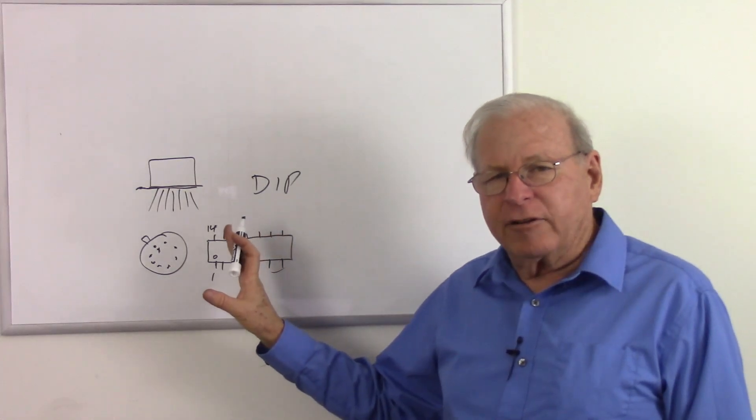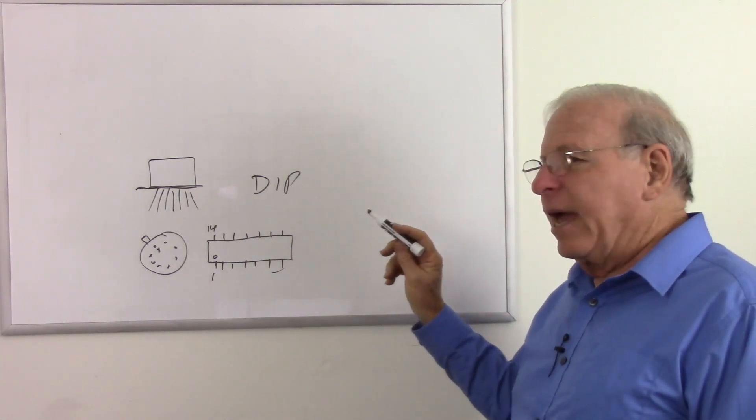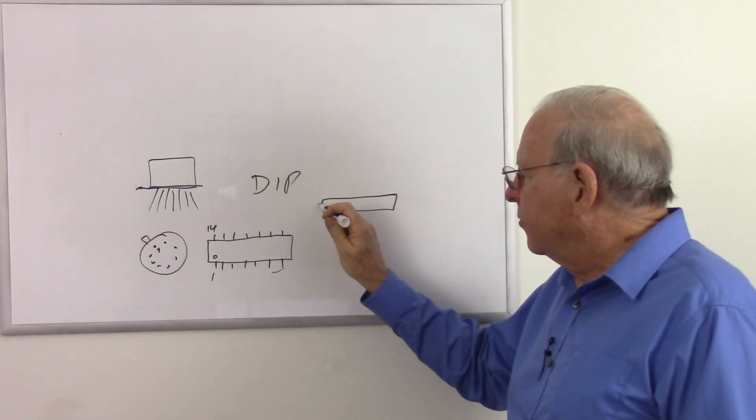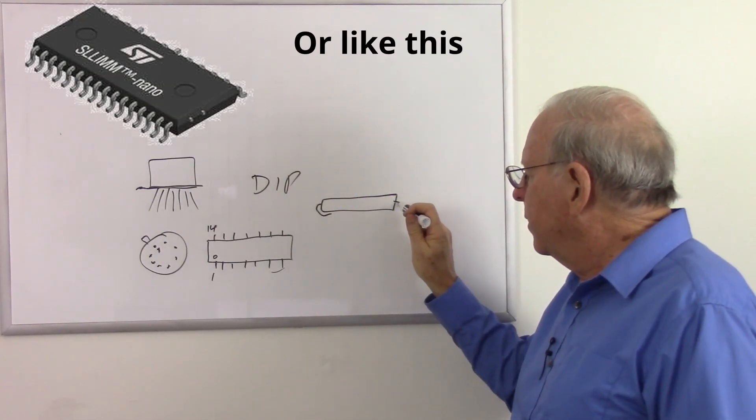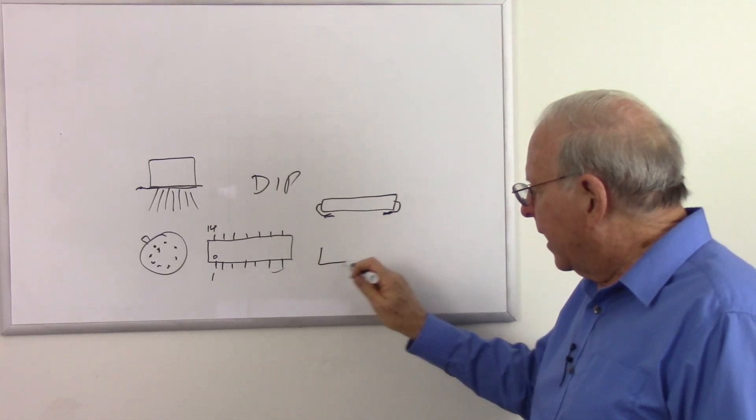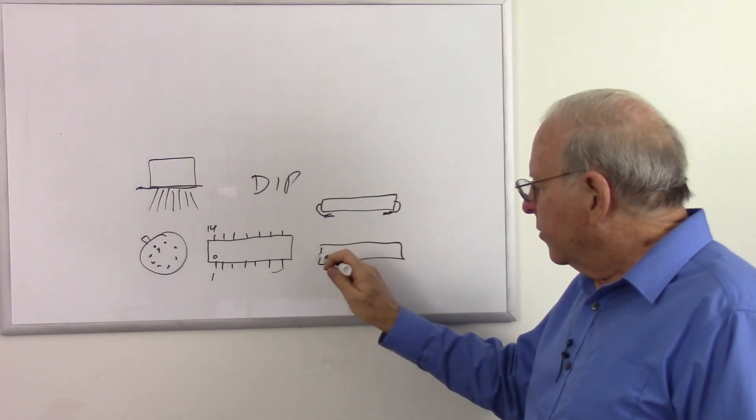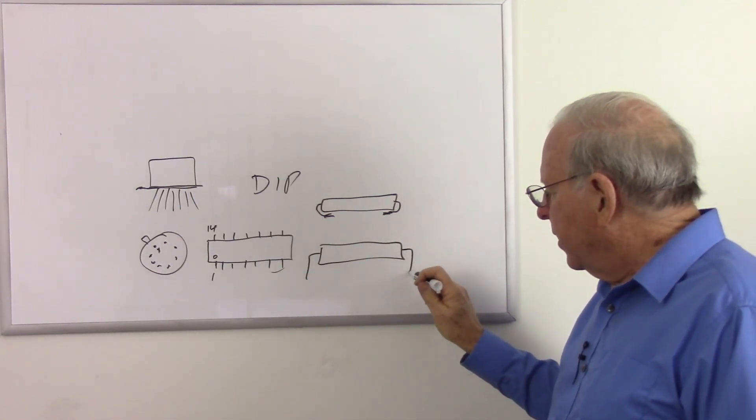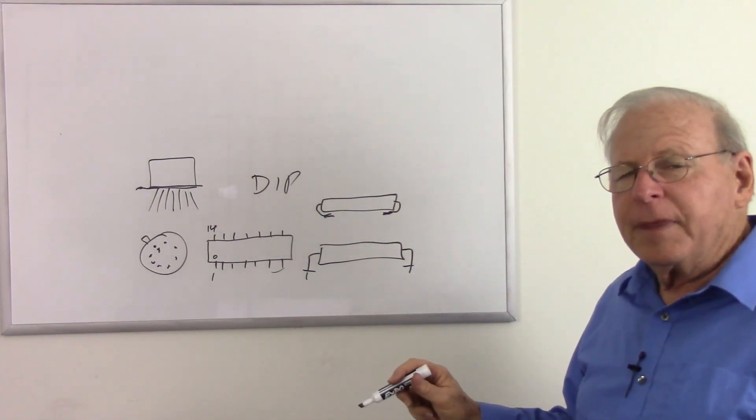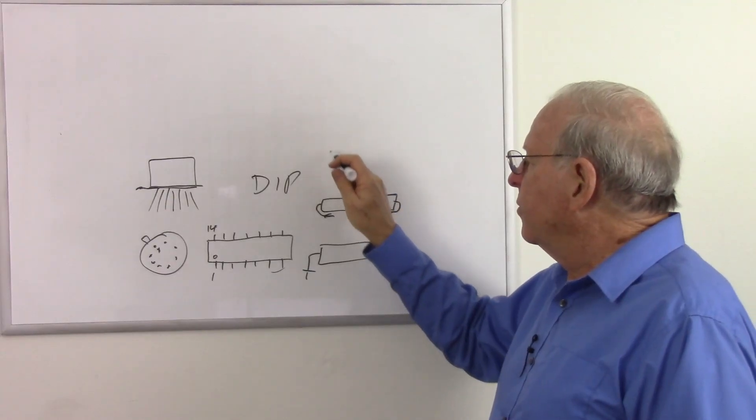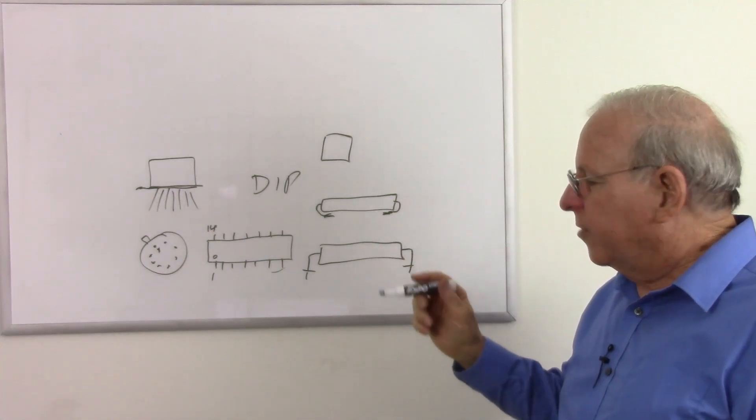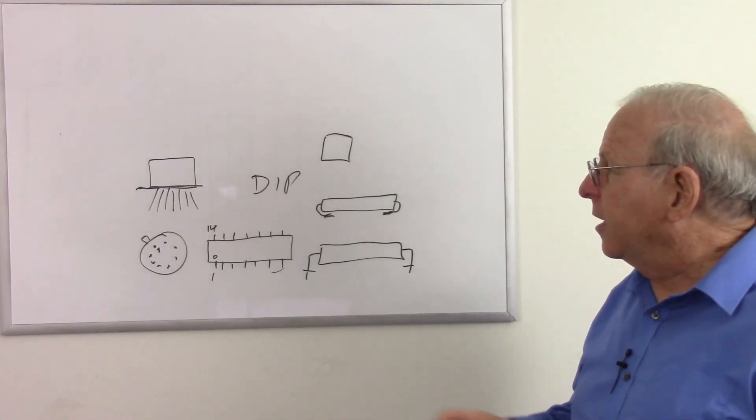So those are the most popular packages for a long time. But now we have other packages, such as surface mount. And those are packages, if we look from the side, the pins come out and fold under. And then they solder directly to the board instead of going through holes like the DIP package. If we look at the sides of the DIP package, it had pins that went down and through holes in the circuit board. Here it's soldered directly to the top. And there's a number of different packages.